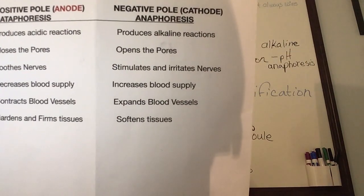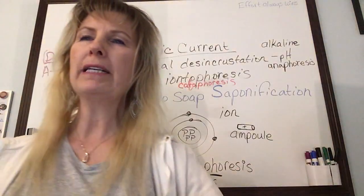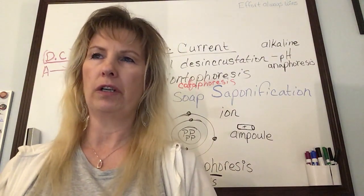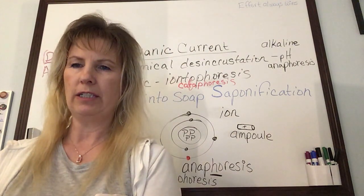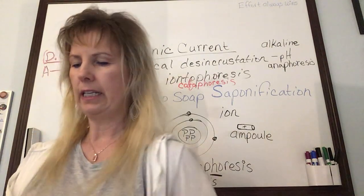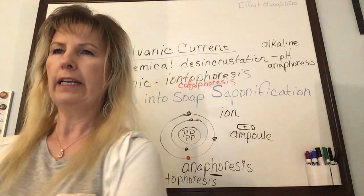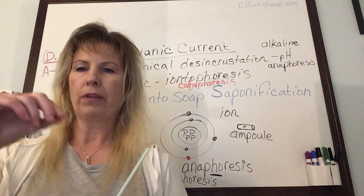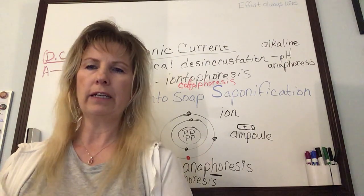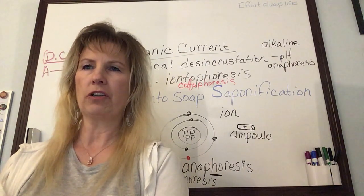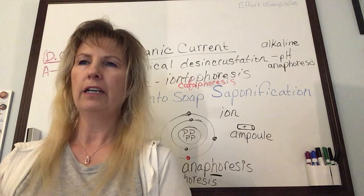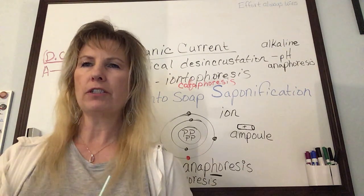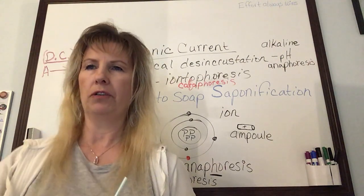Best practices for iontophoresis: keep contact with the skin once the machine is on, because electricity is flowing through the electrodes. Even the slightest removal of the electrode from the skin will cause a tingling or shock sensation. To avoid this, turn off the machine first, then remove the electrode from the skin.